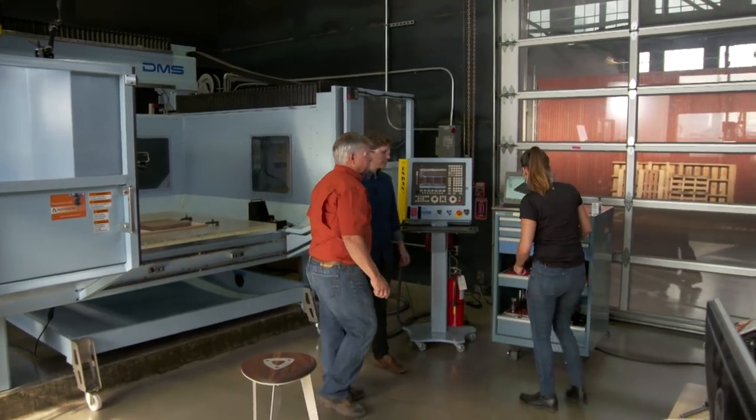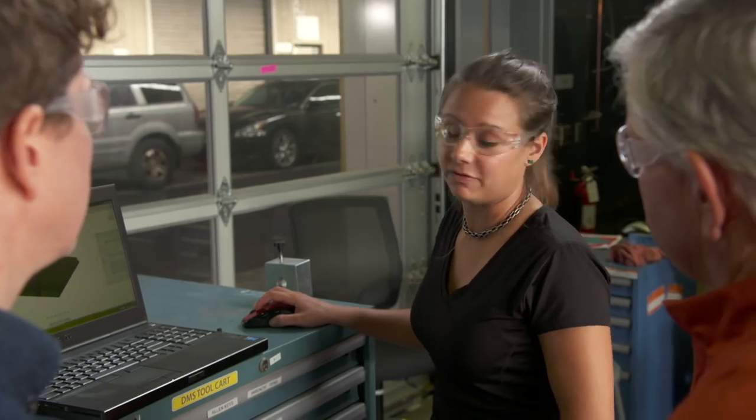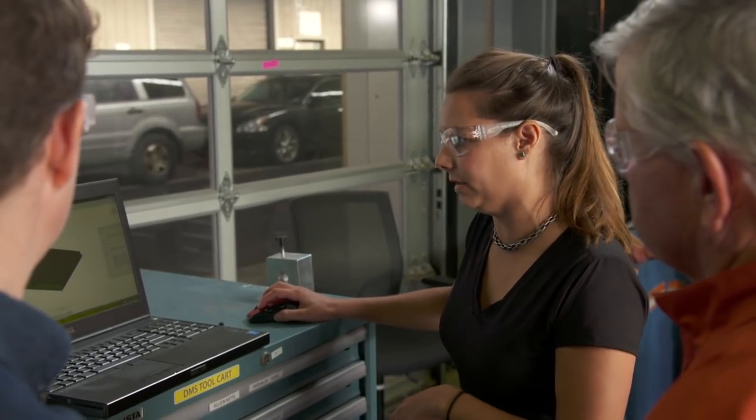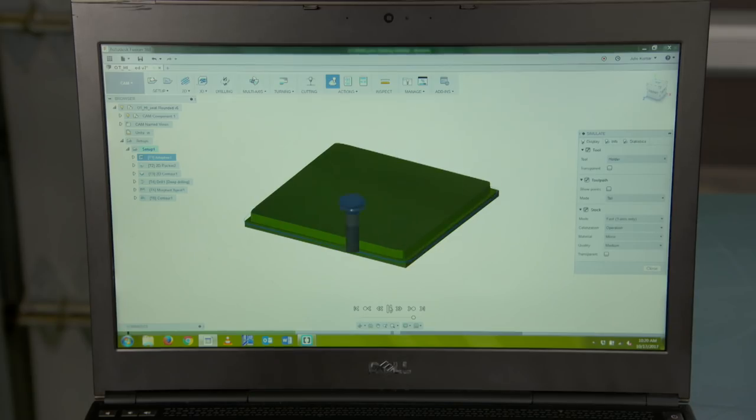And Julie Kumar is going to show us how to run this machine. All right, Julie, what have you got going here? So after I've written the CAM program, that stands for Computer Aided Manufacturing, I'm actually looking at a simulation of the program which shows an animation of what all the different tools are going to do as they're running through the toolpaths.